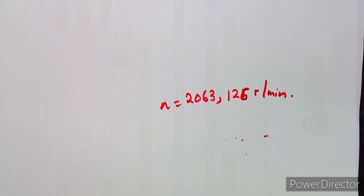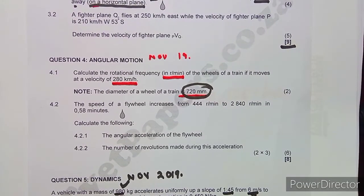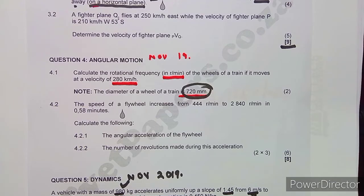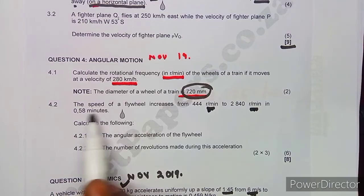On question 4.2, the speed of a flywheel increases from 444 revolutions per minute to 2840 revolutions per minute in 0.58 minutes. Previously we worked with this type of equation in revs per second, but now the question is given in revs per minute — that is the key difference to understand here.